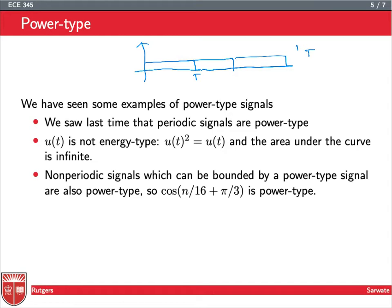So I'm going to get one over two T times T equals one half. So the limit as T goes to infinity of one over two T times T is equal to a half, right? So that tells you that U of T is a power-type signal.